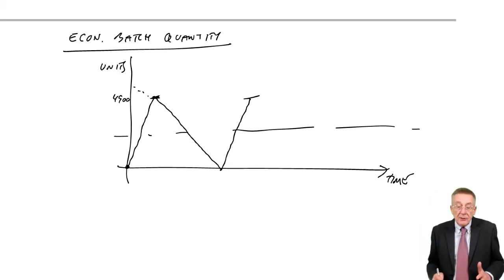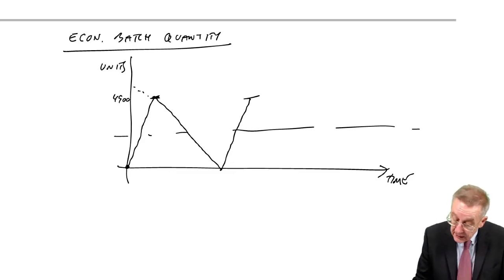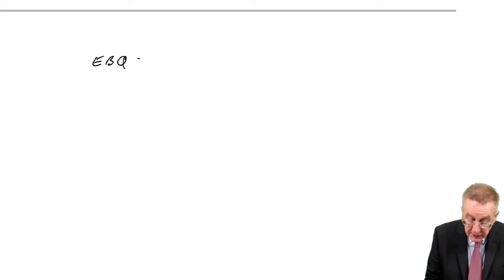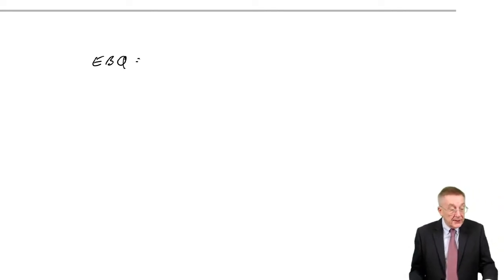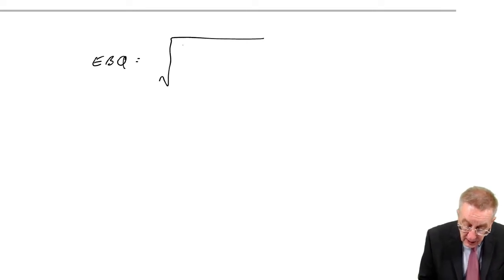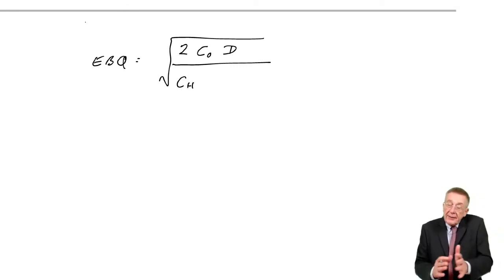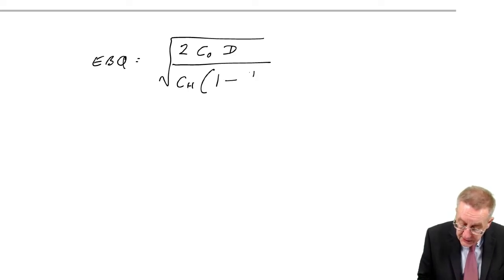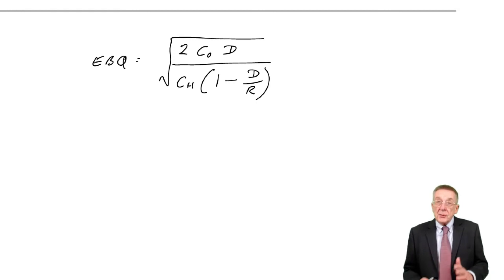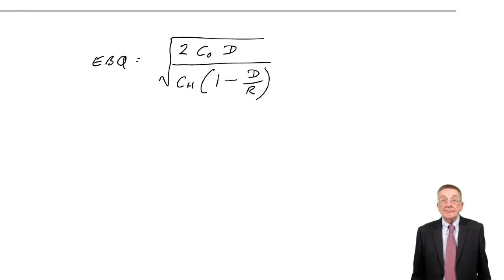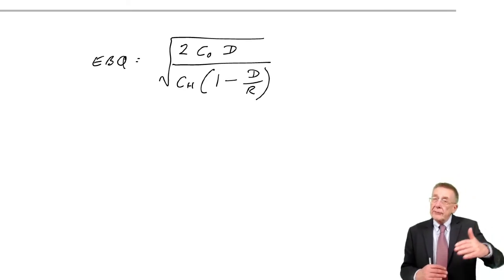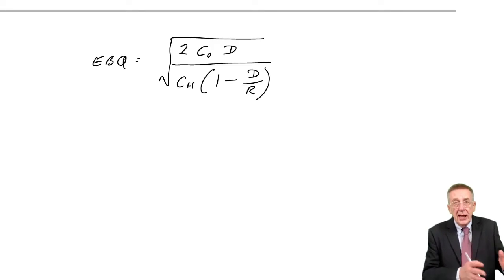So that's what's causing us the problem. And as a result, the formula changes a little bit. You're given it on the formula sheet. The economic batch quantity is the square root of 2C0D over CH times 1 minus D over R. That extra little bit is in fact to account for the fact that the average inventory is a little bit lower because of that delay in receiving goods.